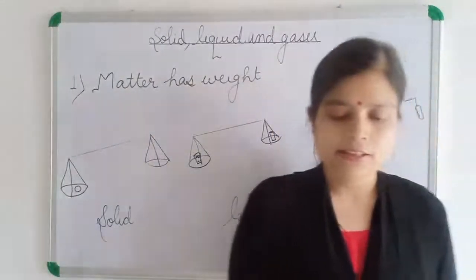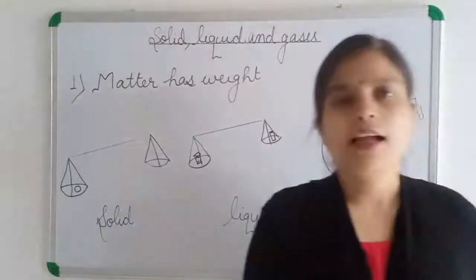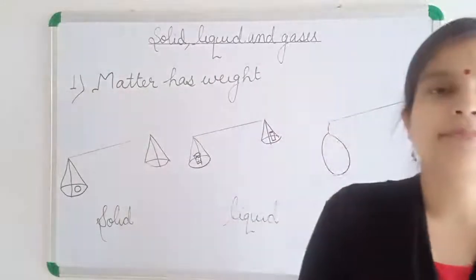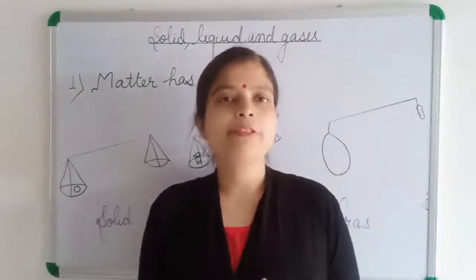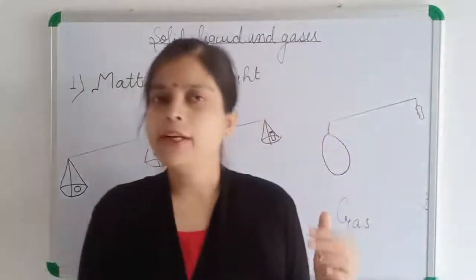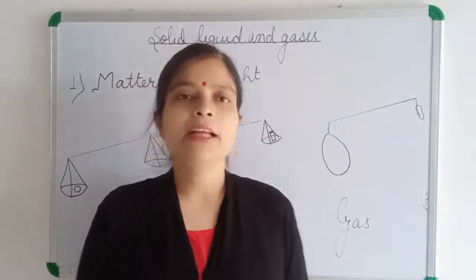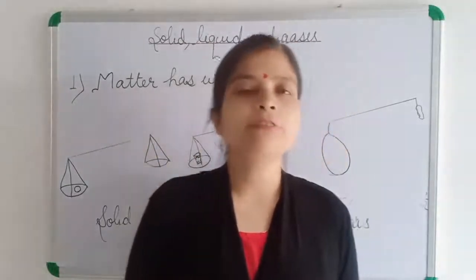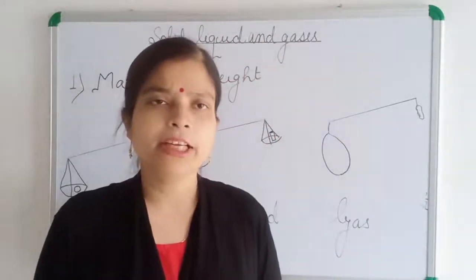What we have learned is that an example of solid is ice, an example of liquid is water, and an example of gas is steam. We found that solids have definite shape and volume. Liquids only have definite volume — they don't have definite shape. And gases neither have definite volume nor definite shape.